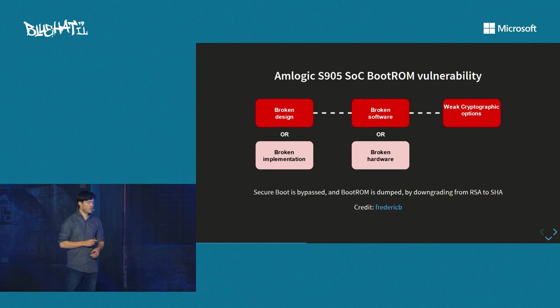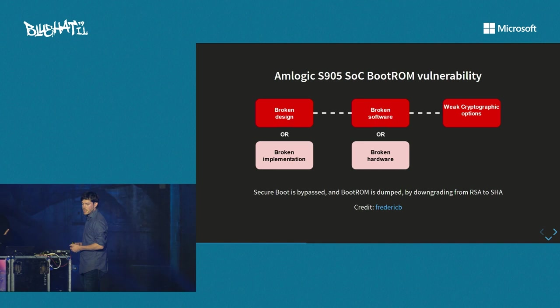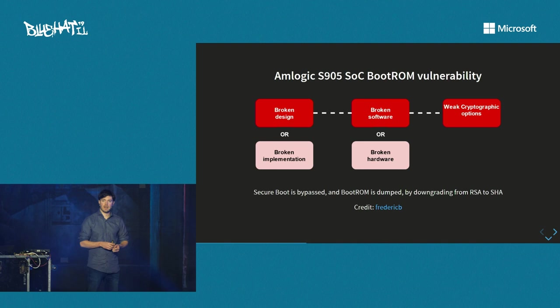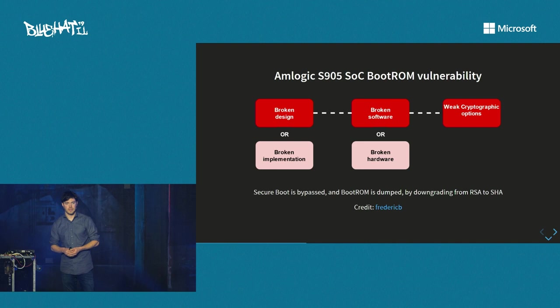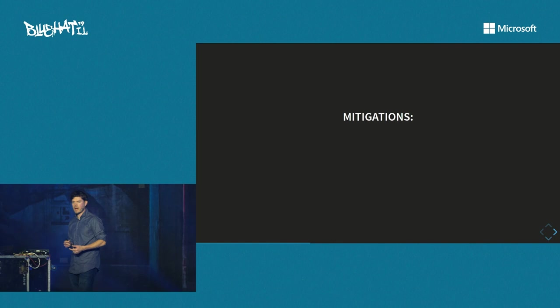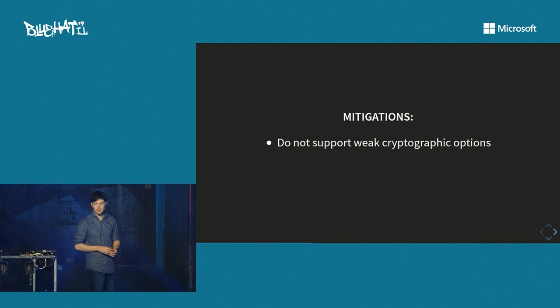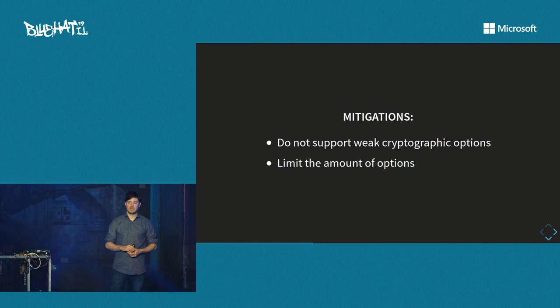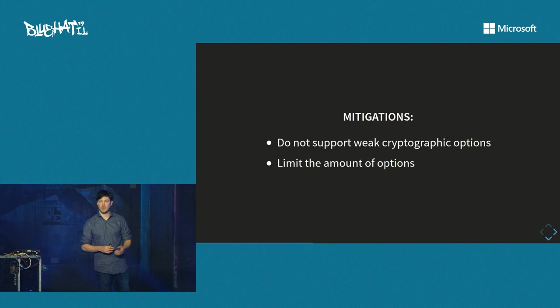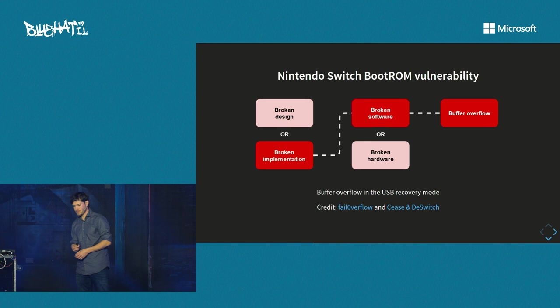Our personal favorite secure boot ROM bypass is the Amlogic example. We believe it is a broken software design due to weak cryptographic options. The bypass is basically a downgrade attack from an RSA signature to a SHA signature. Since the SHA signature contains no secrets, an attacker can just modify the code, update the hash, and that's it. The mitigation: they probably shouldn't have supported weak cryptographic options. In general, limiting the amount of options an attacker can choose from is good for security, because an attacker will always choose the weakest option.